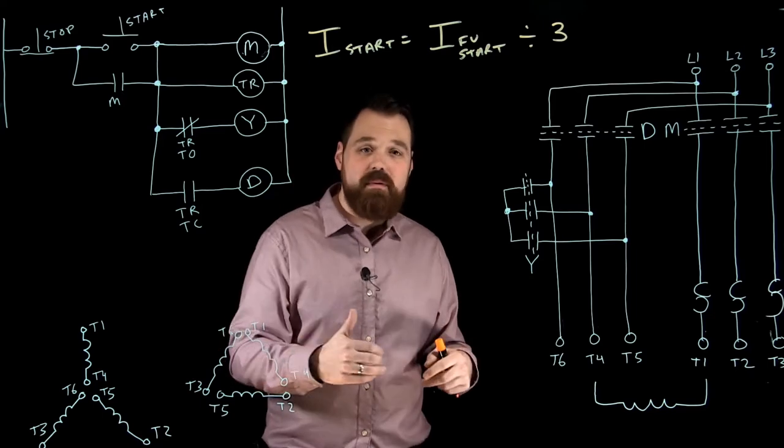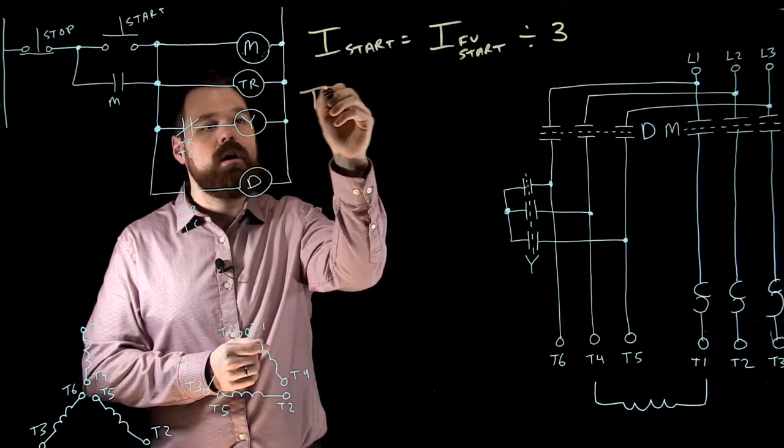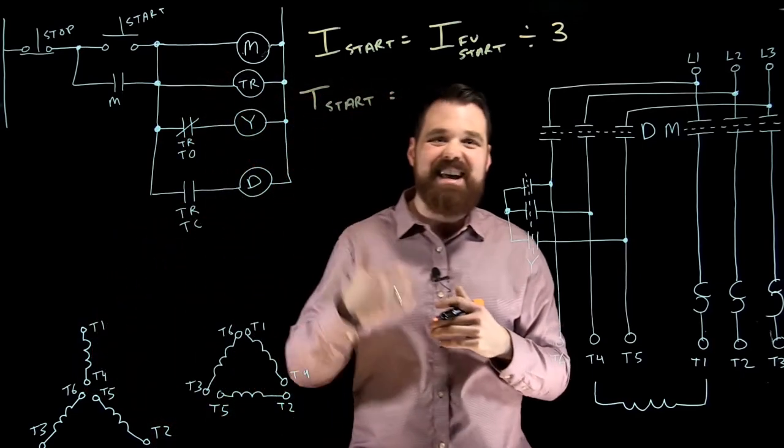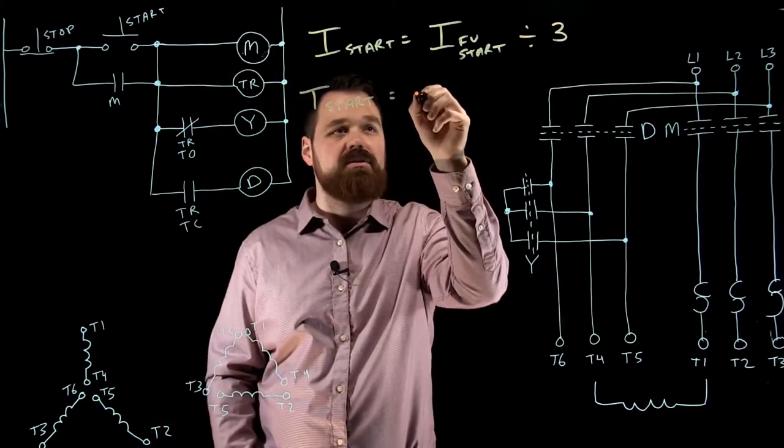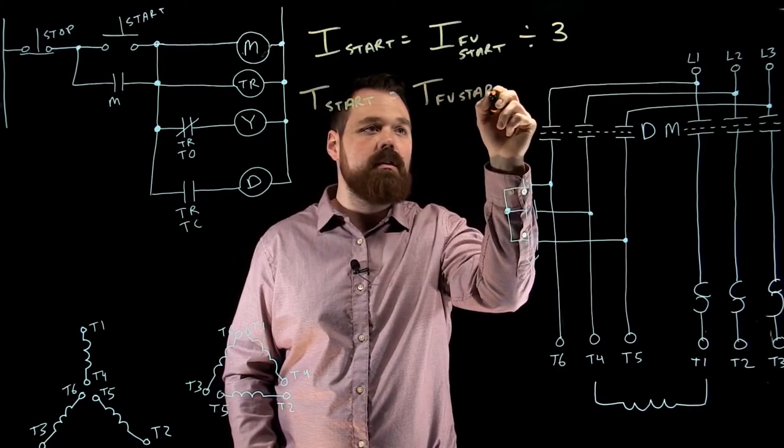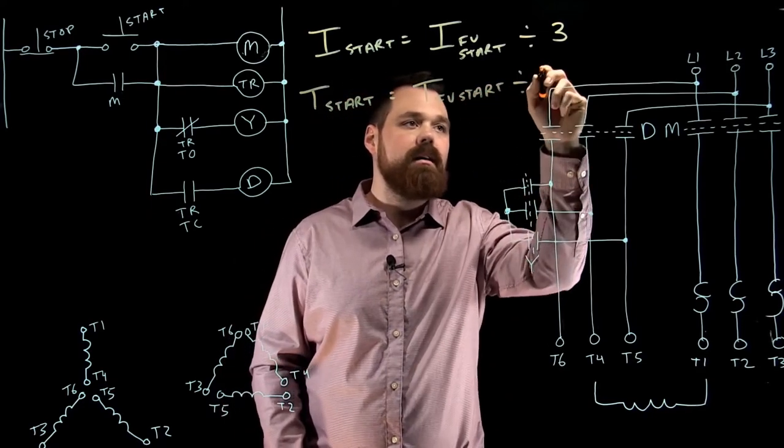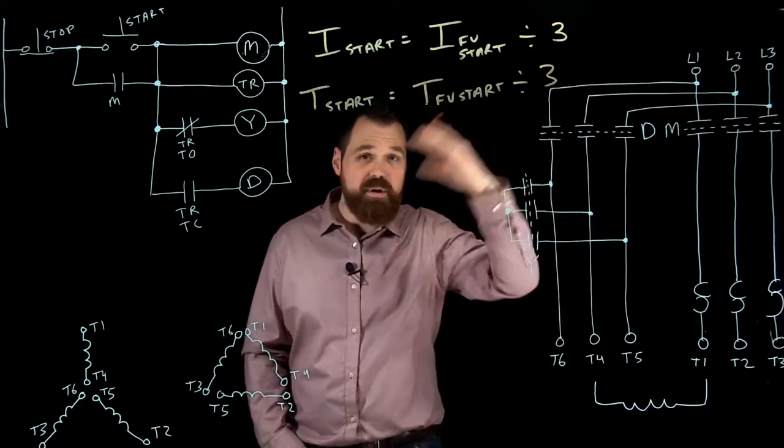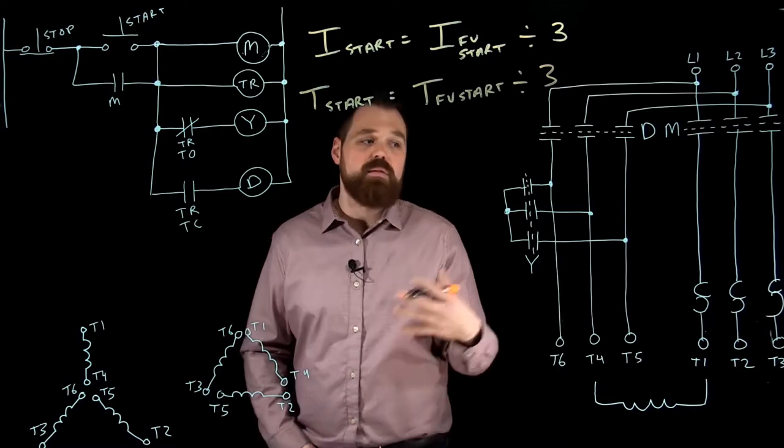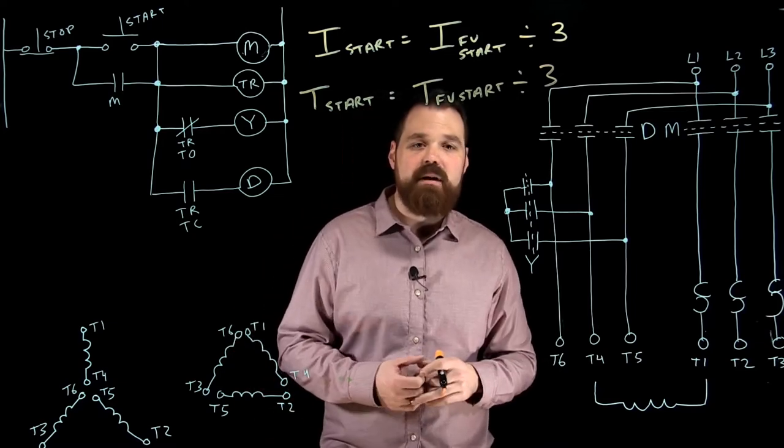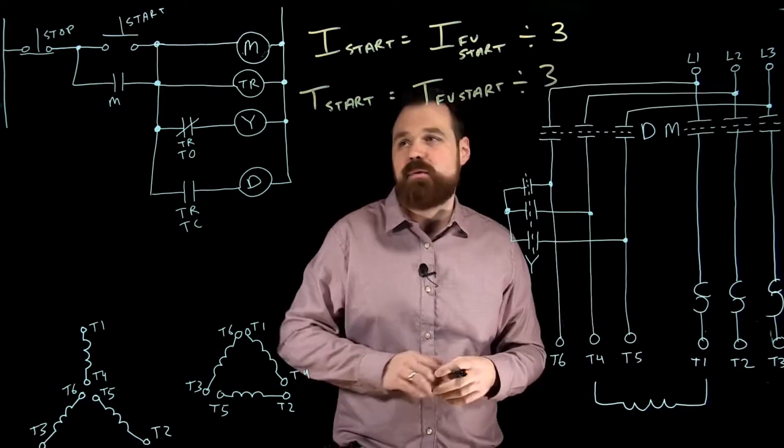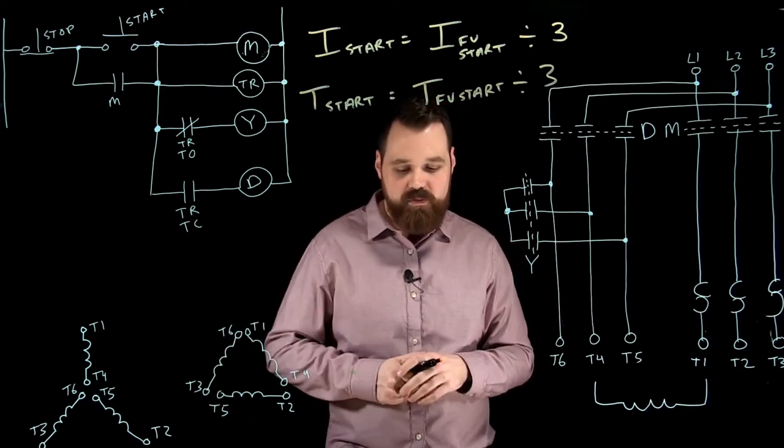Unfortunately, with that huge drop of inrush current, our torque at start sees that exact same relationship, so it's also going to be our torque of our full voltage start divided by 3. So we see a big drop in current, big drop in torque, but we can maybe start that motor with smaller conductors. This again is a motor where you'd want to start it and then start adding load on afterwards once it's switched over into that delta formation.